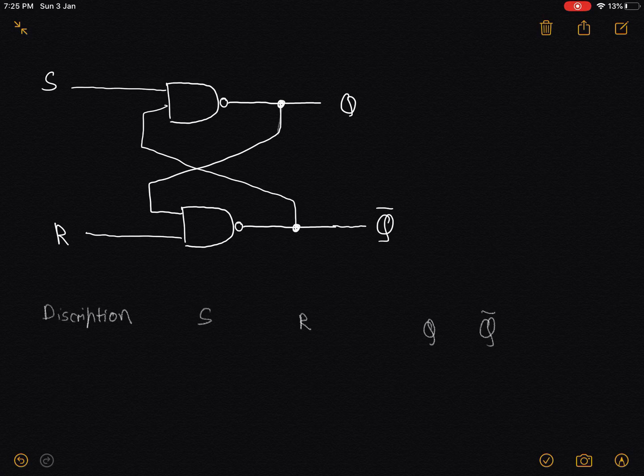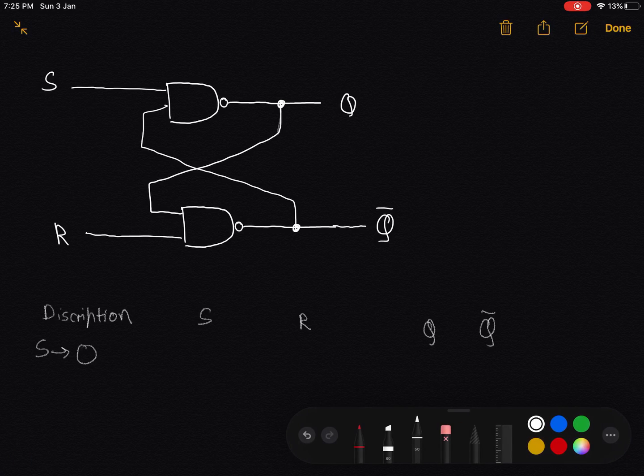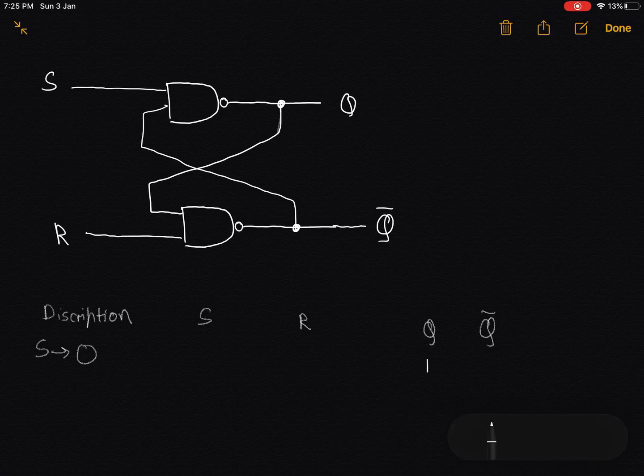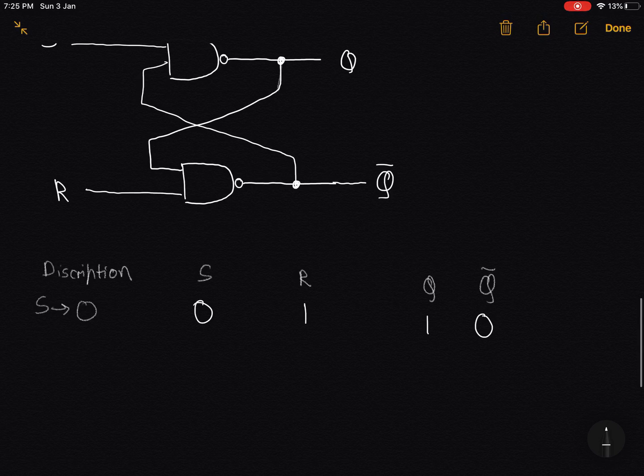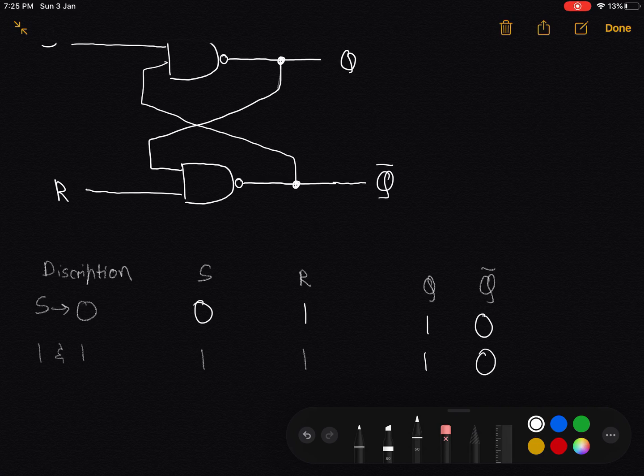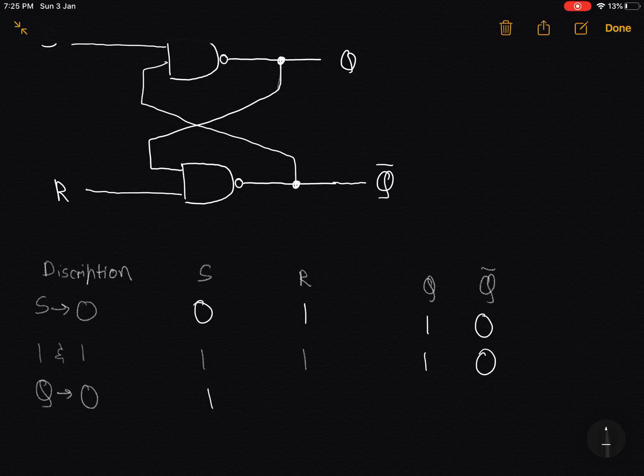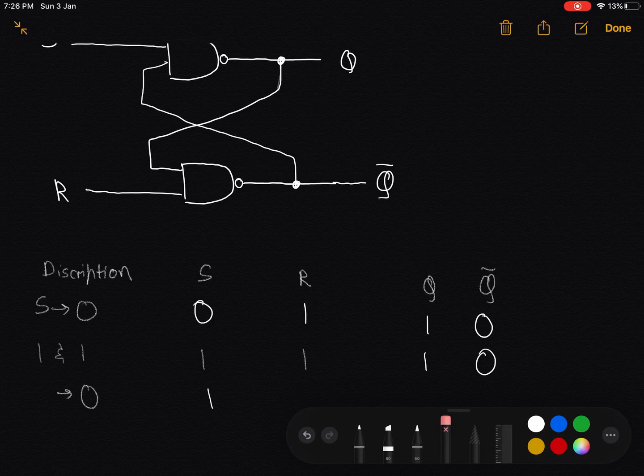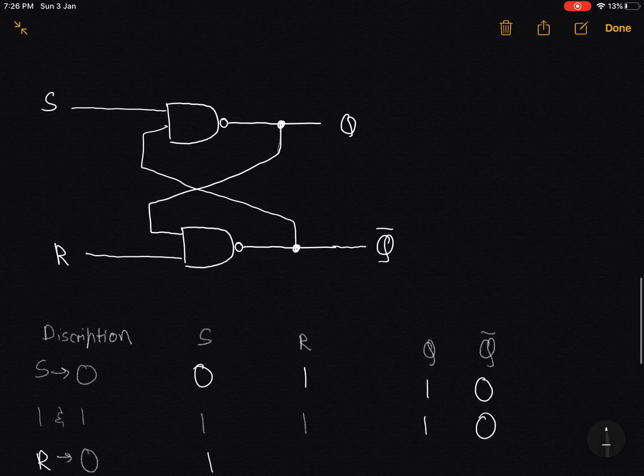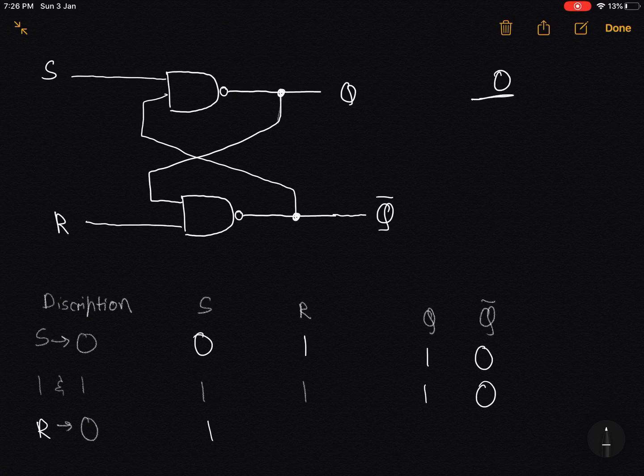So in the first case, we will be setting set to 0. So when we set to 0, we already know what happens. Q becomes 1. Set is 0, R is 1. So Q becomes 1 in this case, and Q complement is 0. Now when we have 1 and 1, S is 1 and R is also 1, Q and Q complement have no change in their values. When R is 0, so this circuit responds to inputs that are 0s. Response to 0s.